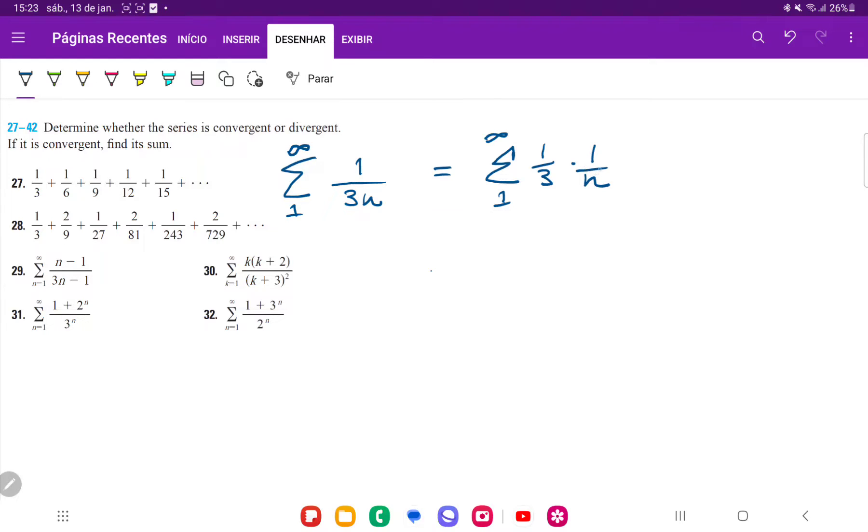And this 1 over n, that is the harmonic series, right? And the harmonic series, it diverges. So the harmonic series, the sum of 1 over n from 1 to infinity, that looks like 1 over 1 plus 1 over 2 plus 1 over 3 plus 1 over 4, and so on and so forth. And now this does diverge.